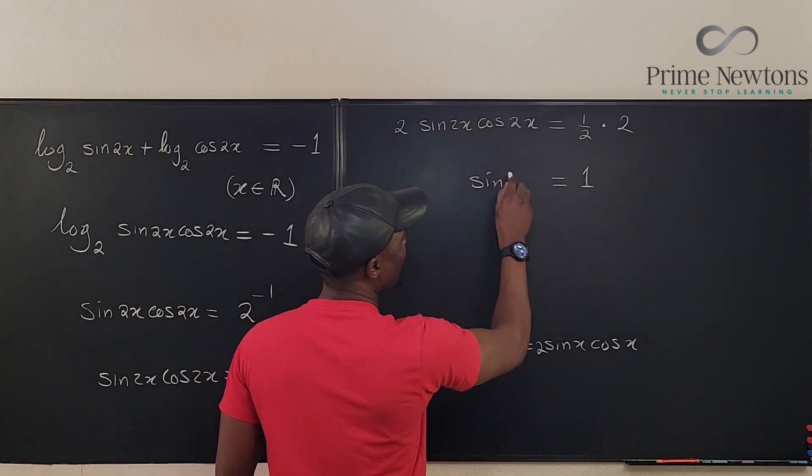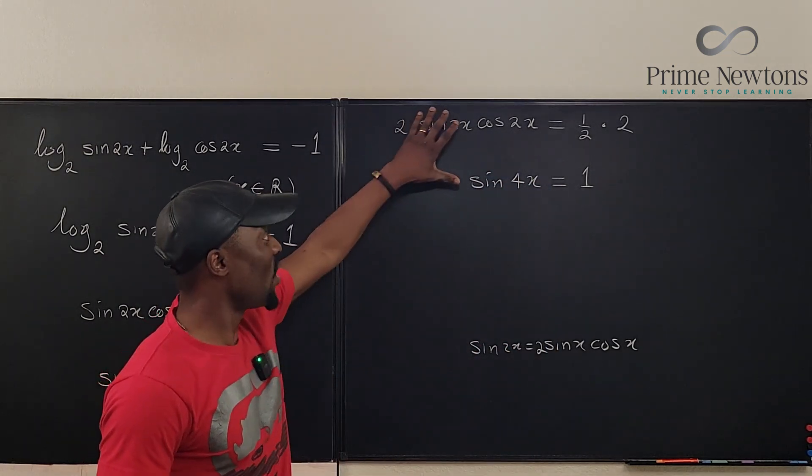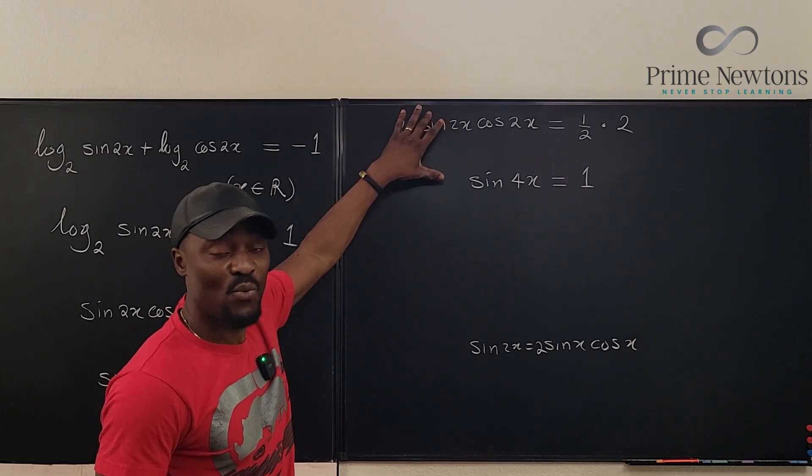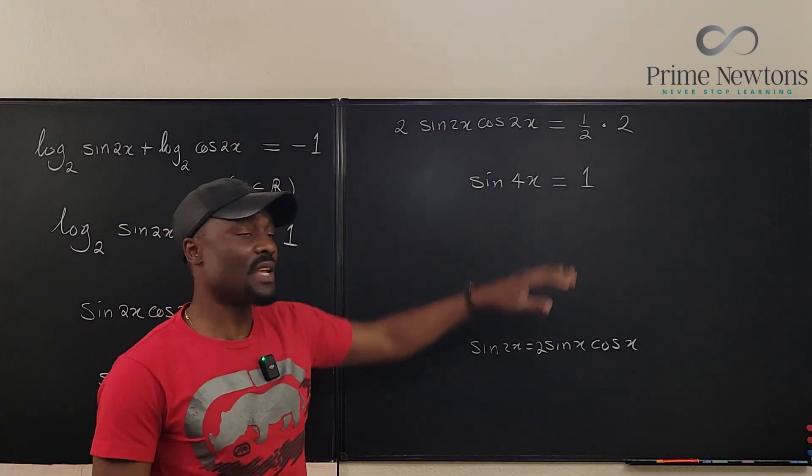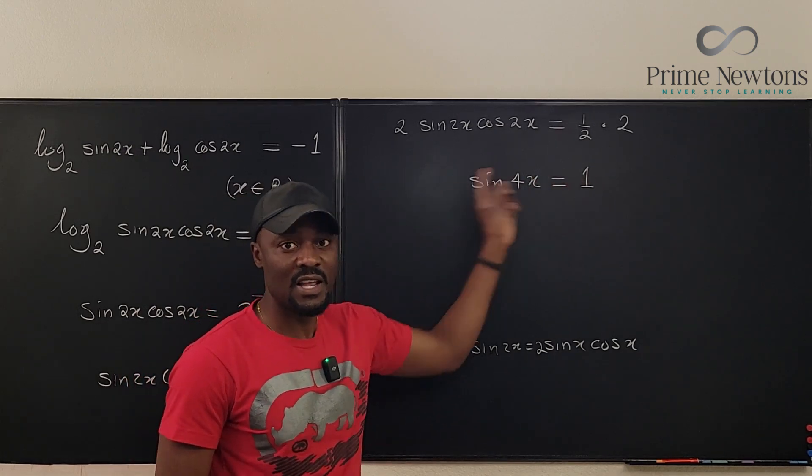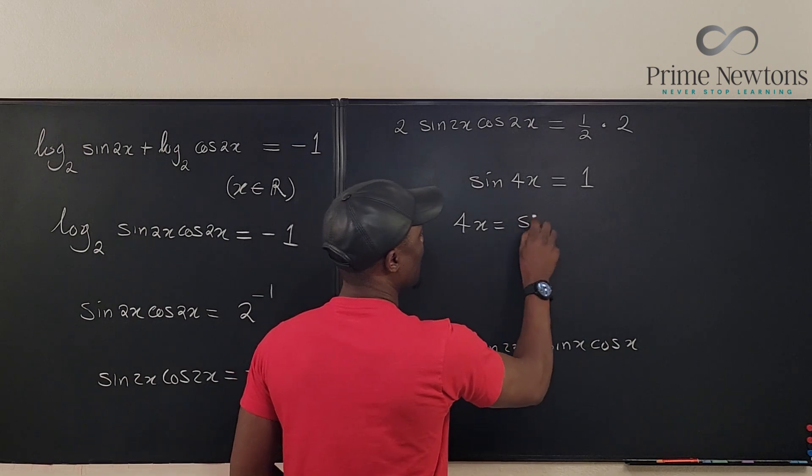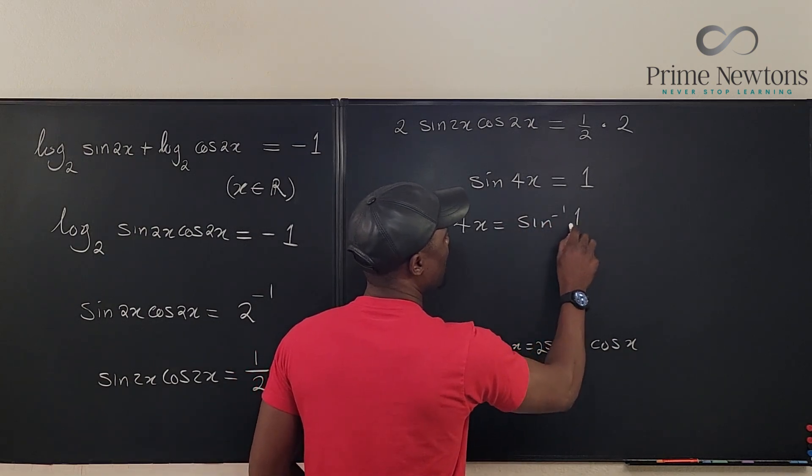So what do we do? We want to release this guy, so we take the arc sine of both. So I know that 4x is arc sine of 1. So what is the arc sine of 1? It's π over 2.